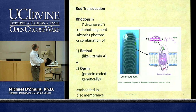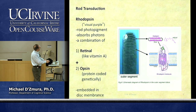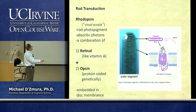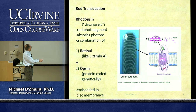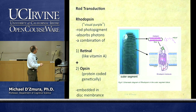Rhodopsin molecules are embedded in disc membranes in the outer segment. The outer segment has discs piled on top of one another — a stack of discs. Each disc has a membranous surface with rhodopsin molecules embedded there. Each rhodopsin molecule is made of retinal, embedded inside the opsin, the genetically coded protein.